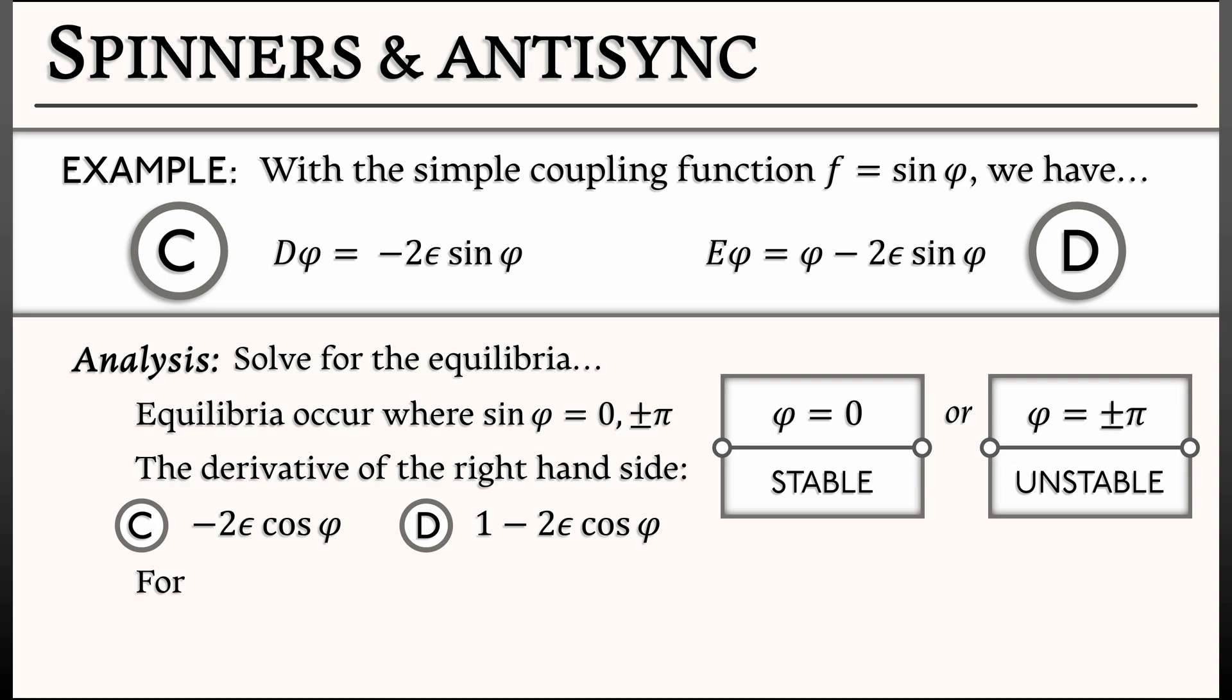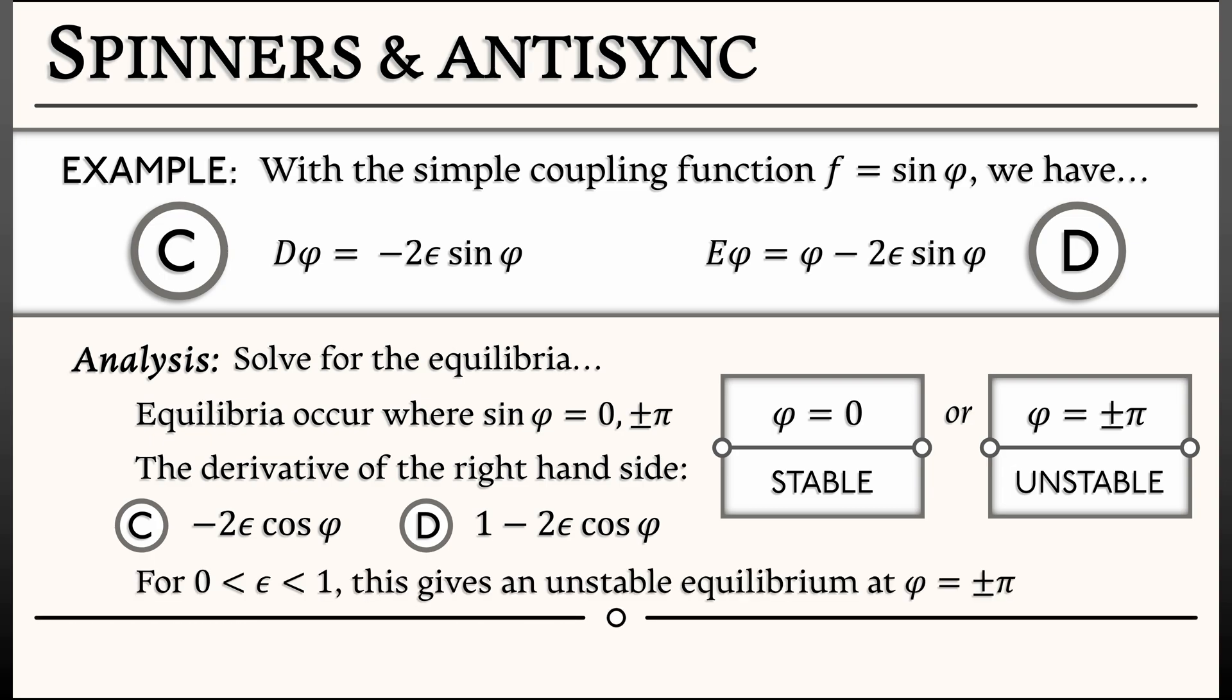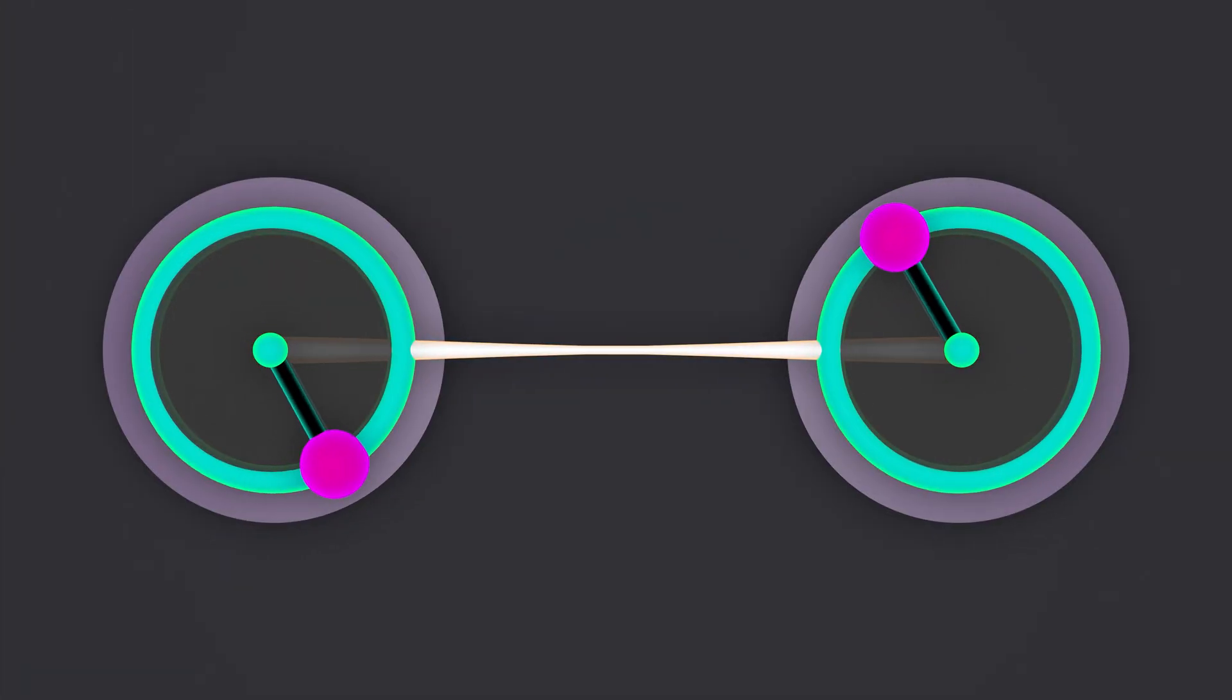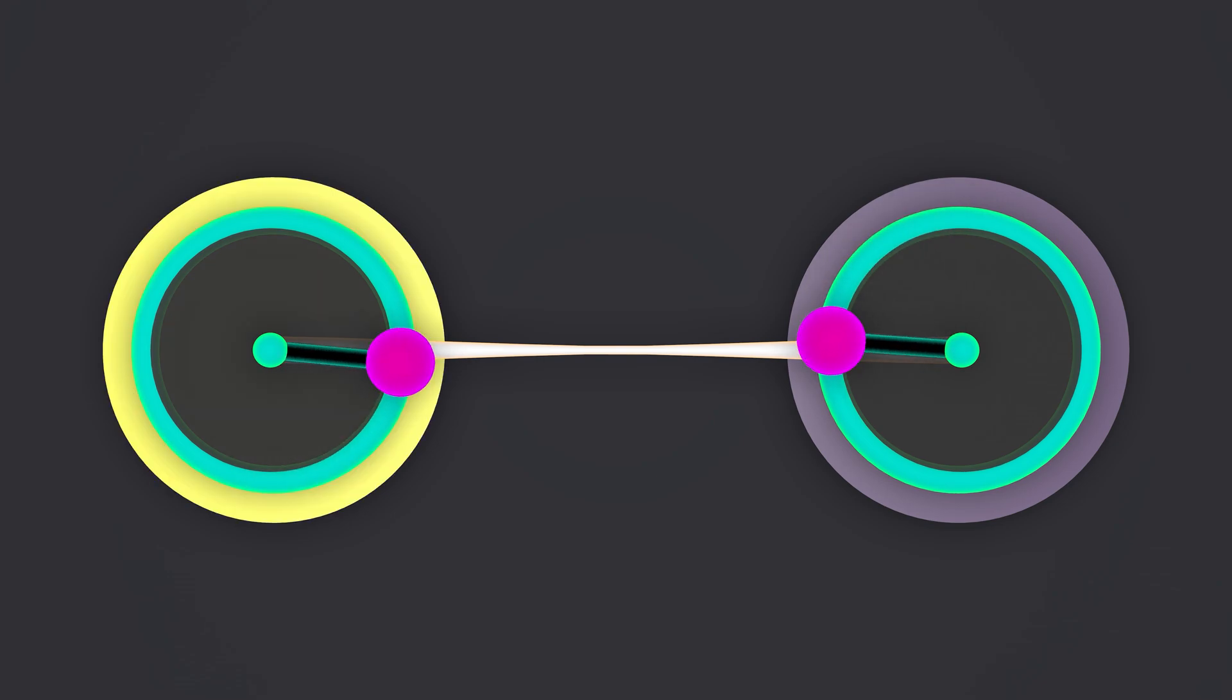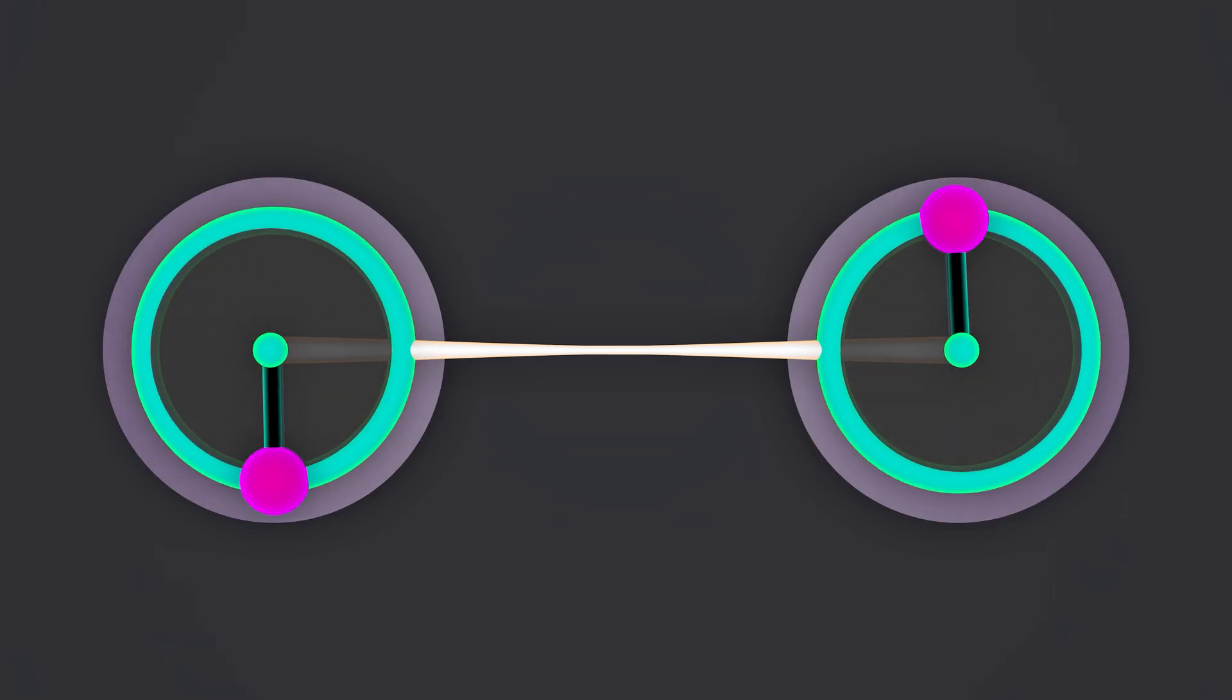This unstable equilibrium is very interesting. What does it mean to have φ = ±π? It means that you are not synchronized—you are anti-synchronized. Your two spinners are perfectly out of phase. And this is also an equilibrium for the system. If you start in that state, you stay in that state, although it is unstable.